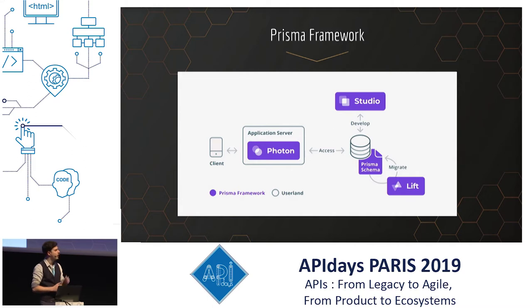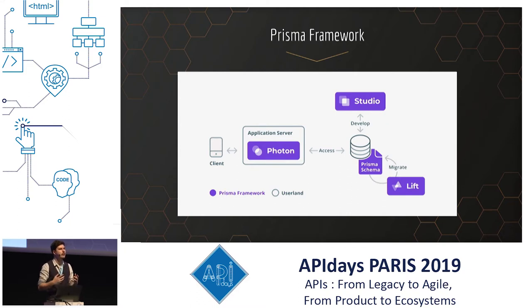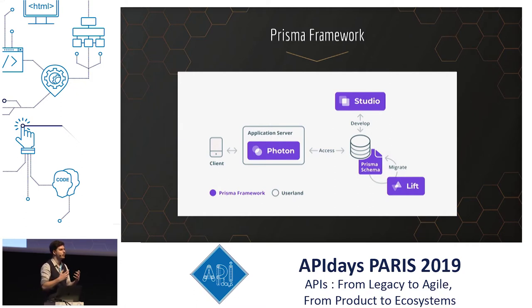At the heart of this architecture, you can see that there is a Prisma schema. The Prisma schema is used to define the structure of your data, and it will be used by all the other tools of the Prisma framework to know how to work with your database.